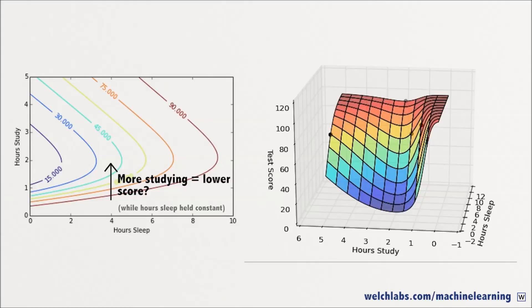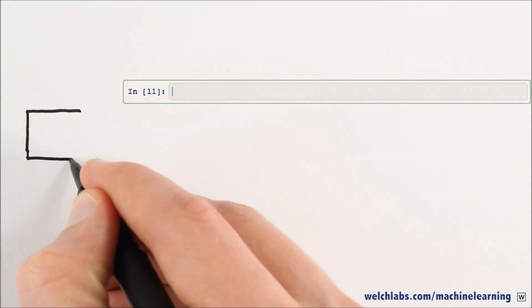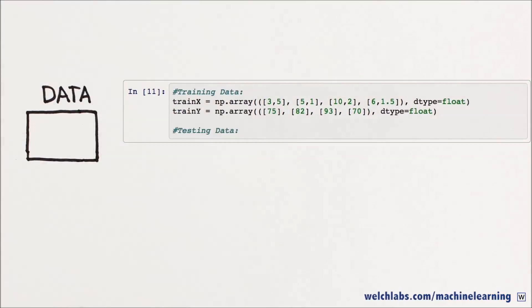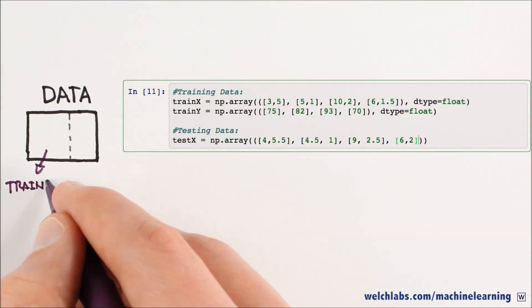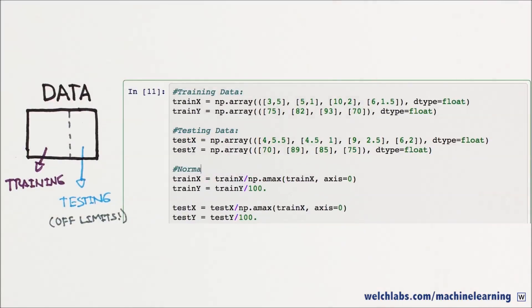So it appears our model is overfitting, but how do we know for sure? A widely accepted method is to split our data into two portions, training and testing. We won't touch our testing data while training the model, and only use it to see how we're doing.